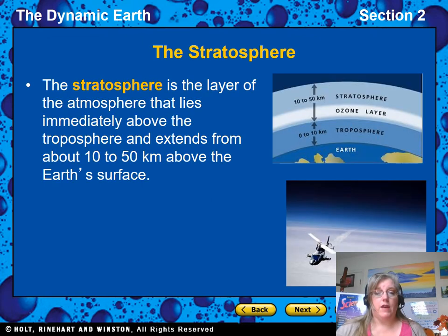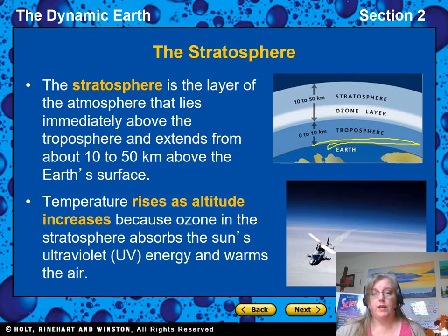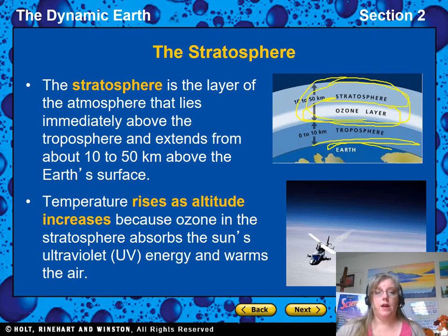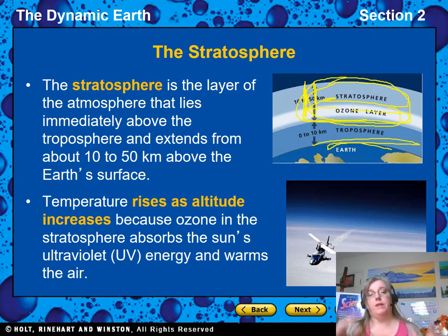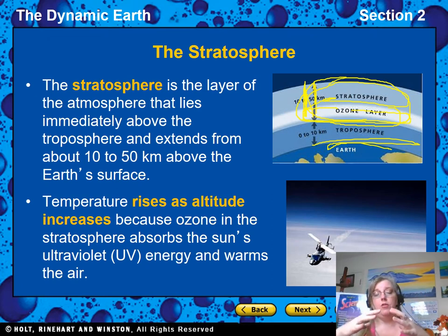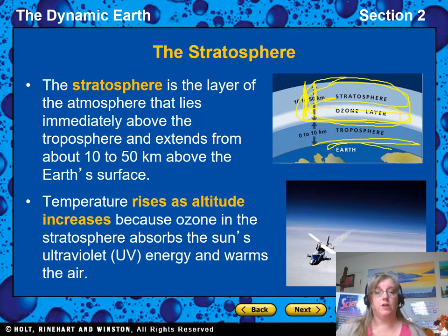The next layer up is the stratosphere, which includes the ozone layer. It's about 10 to 50 kilometers beyond the troposphere. As you get higher, the temperature goes up. The ozone layer is absorbing ultraviolet rays from the Sun — that's how ozone protects us — and because it's absorbing those UV rays, it heats up the stratosphere.